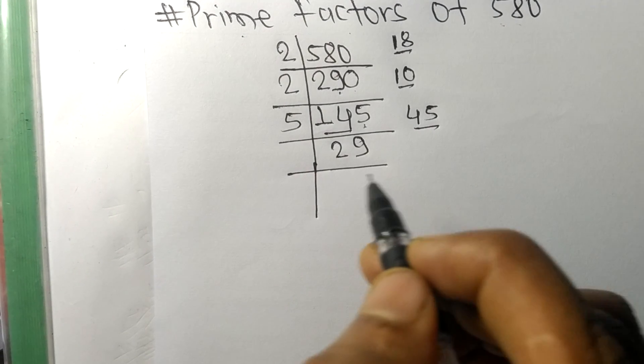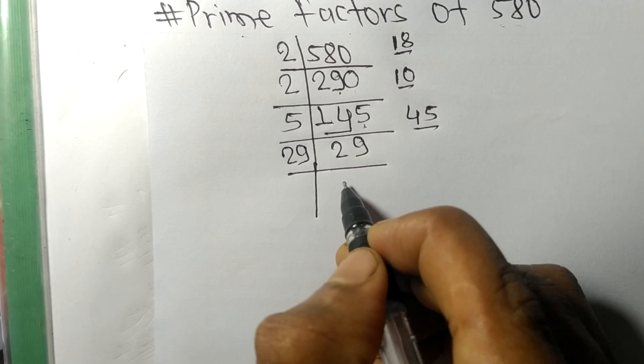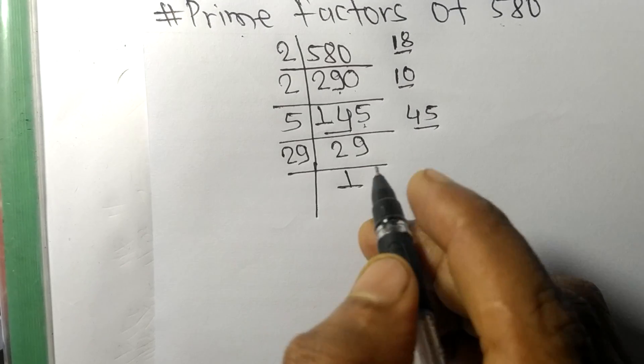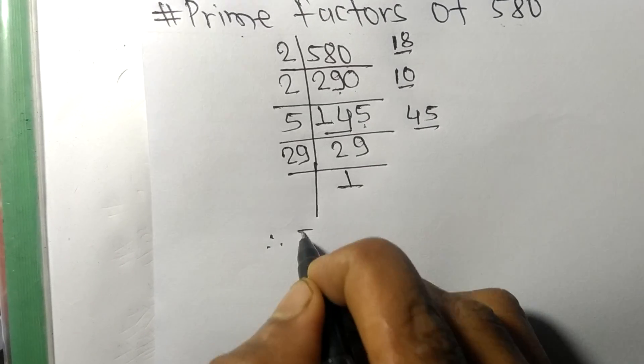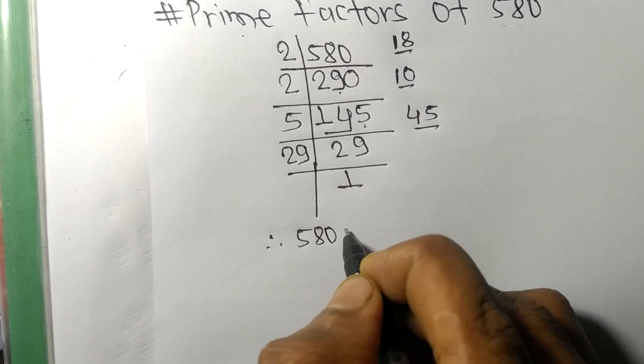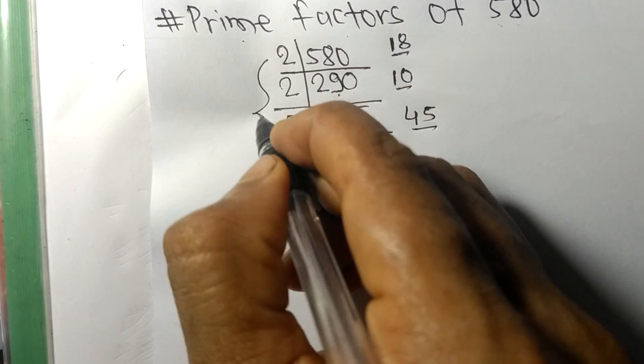So it is divisible by 29 itself and we get here 1. Therefore 580 is equal to, from this side,